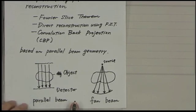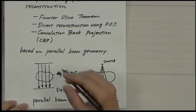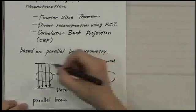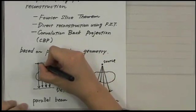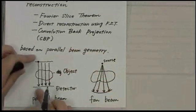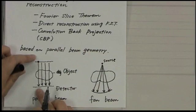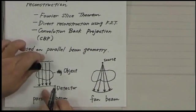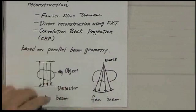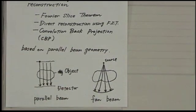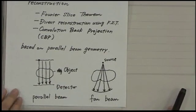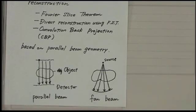Actually, this is the first generation CT geometry. How it works is there's one source here and one detector here. And then we get data and just move like this and keep just taking the data.